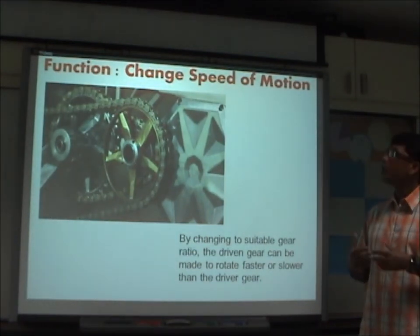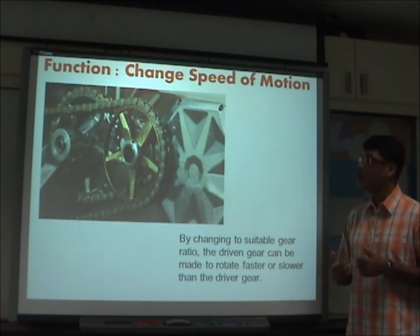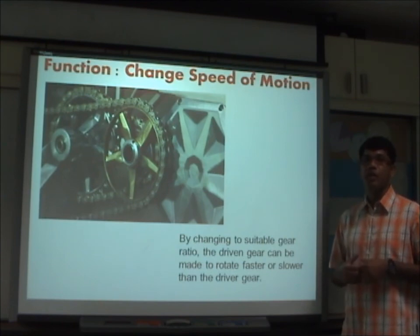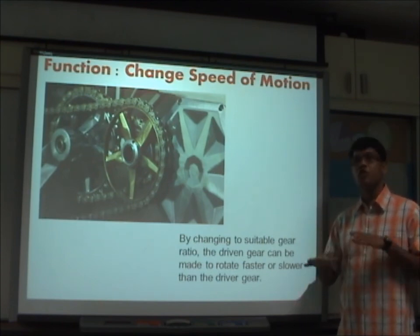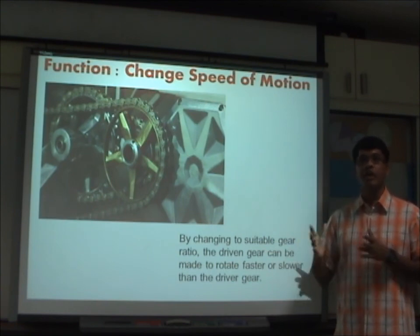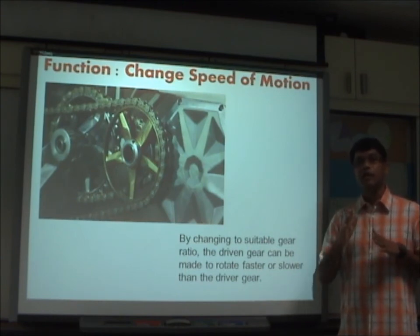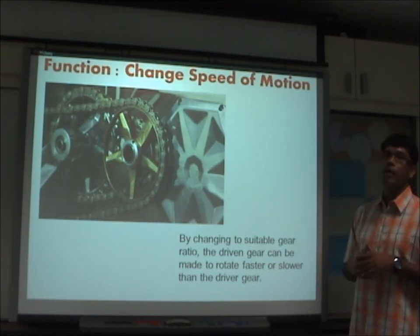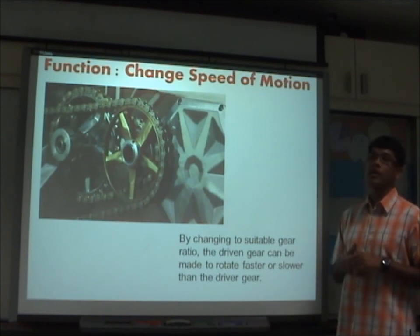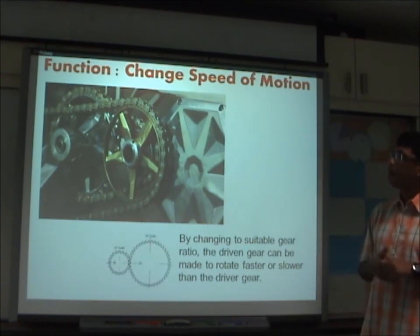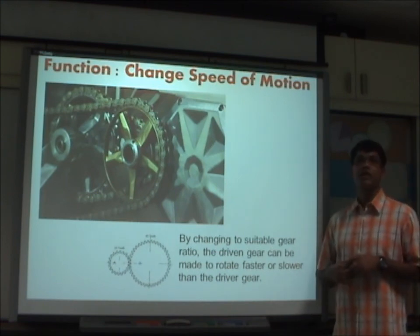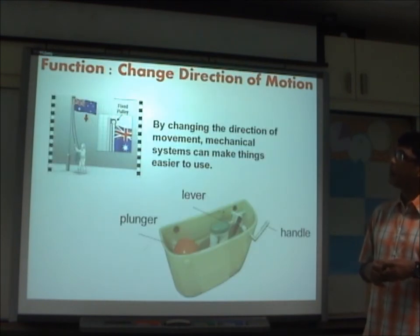Talking about change of speed of motion — most of you would have cycled before. A bicycle has a mechanism — a chain and sprocket — which can change the speed of motion. The faster you pedal, the faster the bicycle tends to go. In fact when you cycle at a particular speed, the bicycle actually moves forward in linear motion much faster than you might expect. In that way the chain and sprocket provides a change in speed of motion. Gears are another way of changing motion speed.